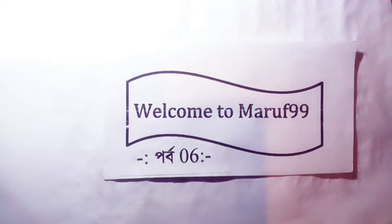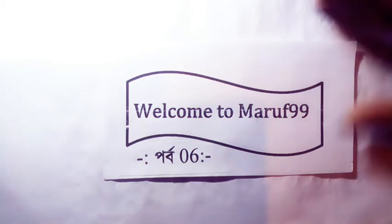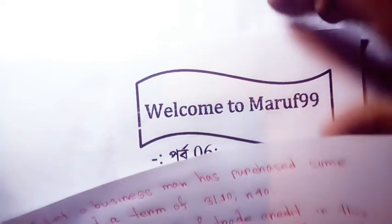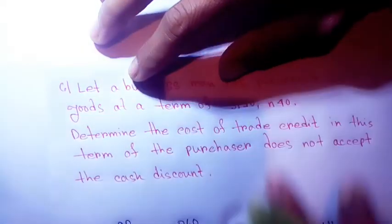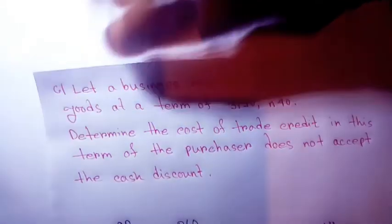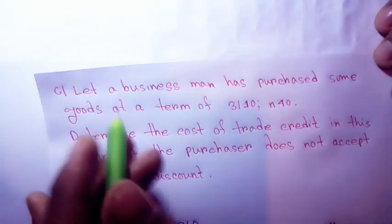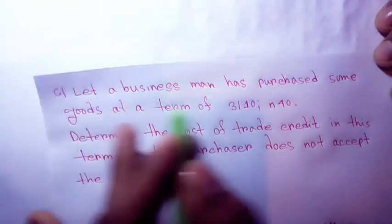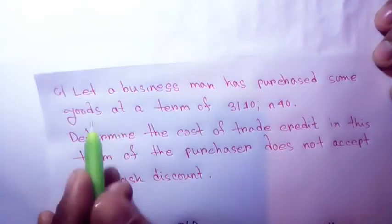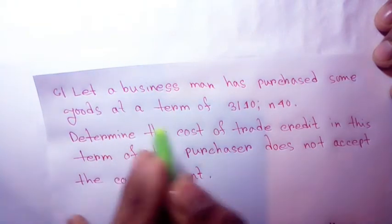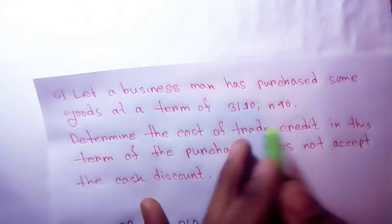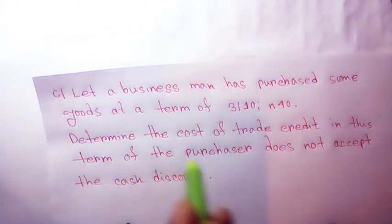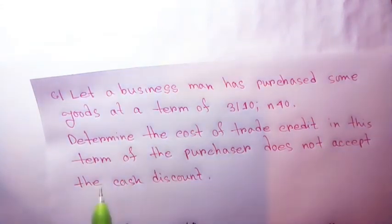Welcome. This is a tutorial on current liabilities management. A businessman has purchased some goods at a term of 3/10 and net 40. We need to determine the cost of trade credit in this term.